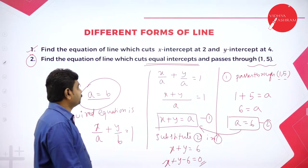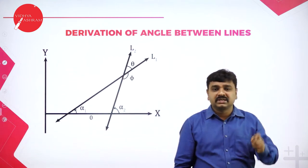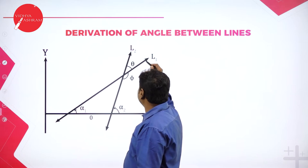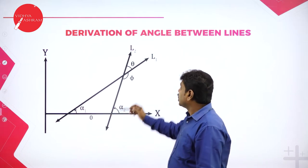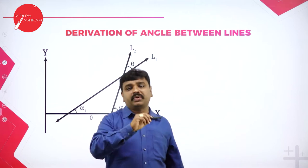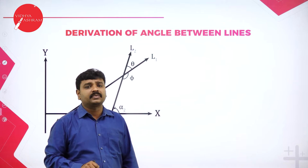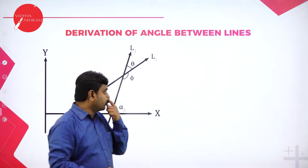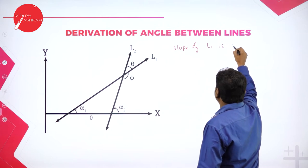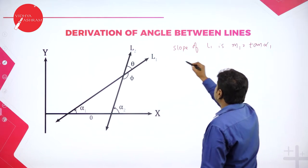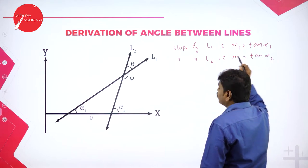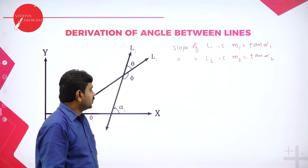Now we go to a very important concept: angle between lines. When two different lines intersect, you need to find the angle between them. Line L1 makes an angle alpha1 with the x-axis, and line L2 makes an angle alpha2 with the x-axis. If you know the angle made by the line with the x-axis you can find the slope. The definition of slope is tangent of the angle made by the line with the x-axis. So slope of L1 is m1 equals tan alpha1, and slope of L2 is m2 equals tan alpha2.